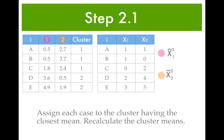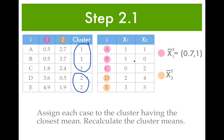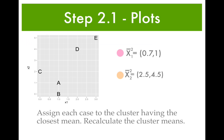At this point, A, B, and C are in cluster 1, and D and E are in cluster 2. So we need to recalculate the means. The mean of cluster 1 is the mean of A, B, and C, giving 0.7 and 1. The mean of cluster 2 is the mean of D and E, which gives 2.5 and 4.5. We plot those means — that's the mean for cluster 1, and here's the mean for cluster 2.